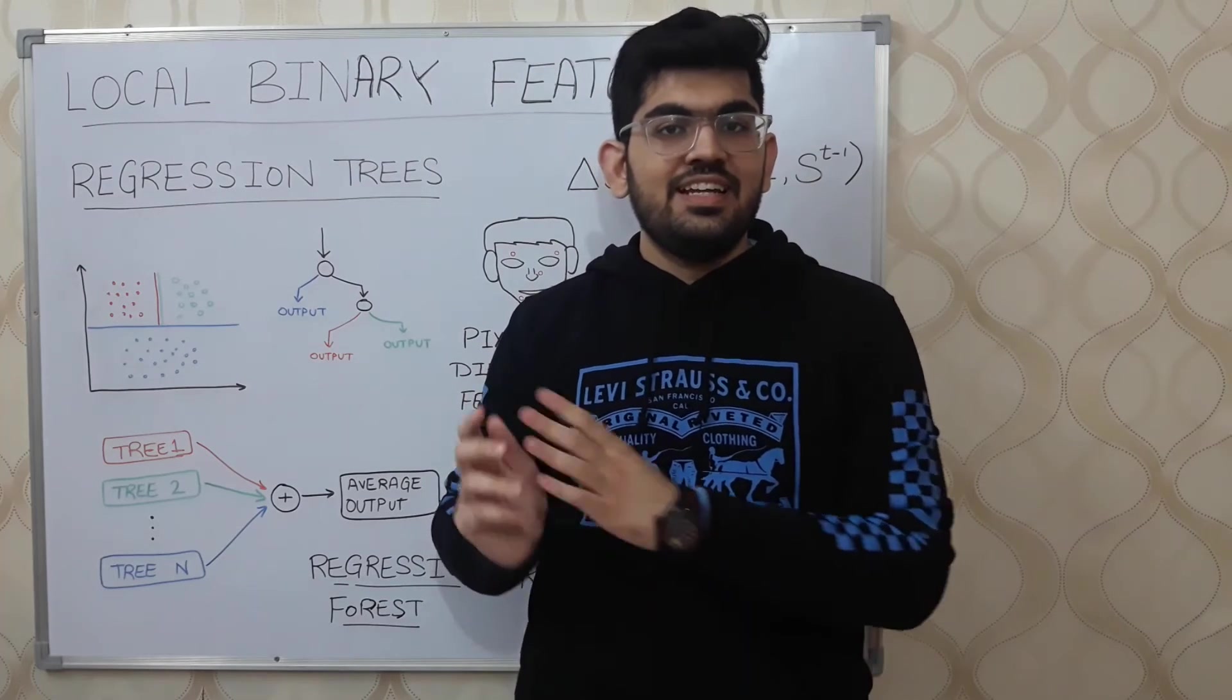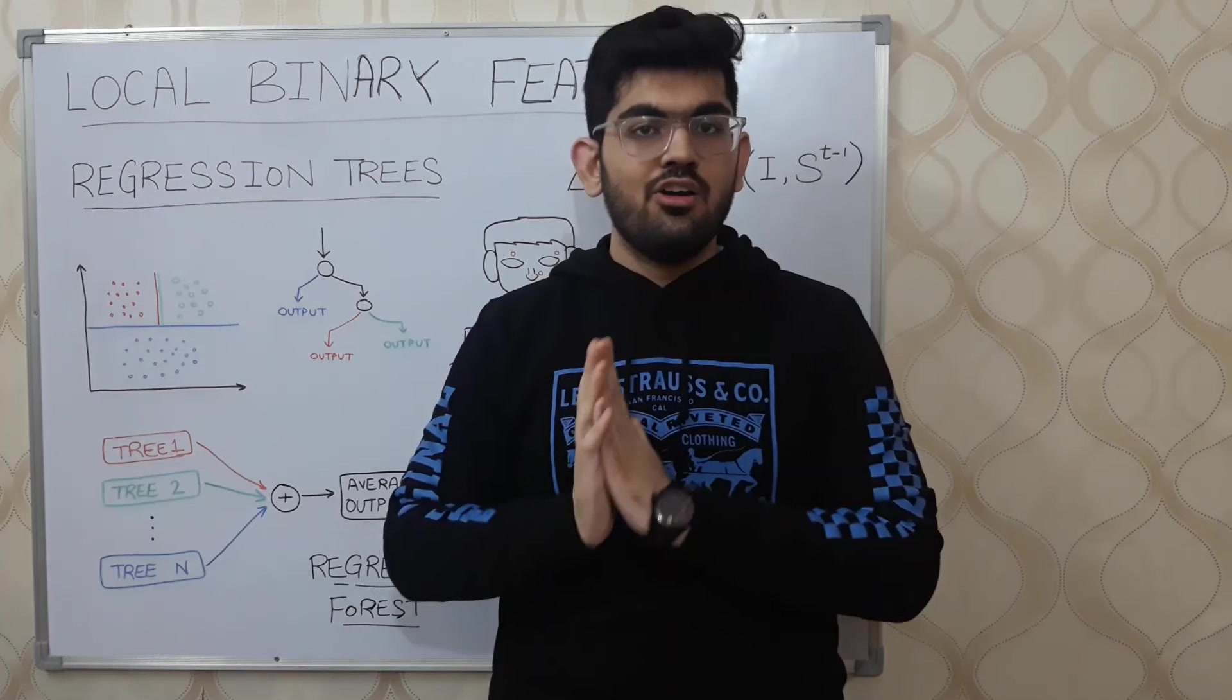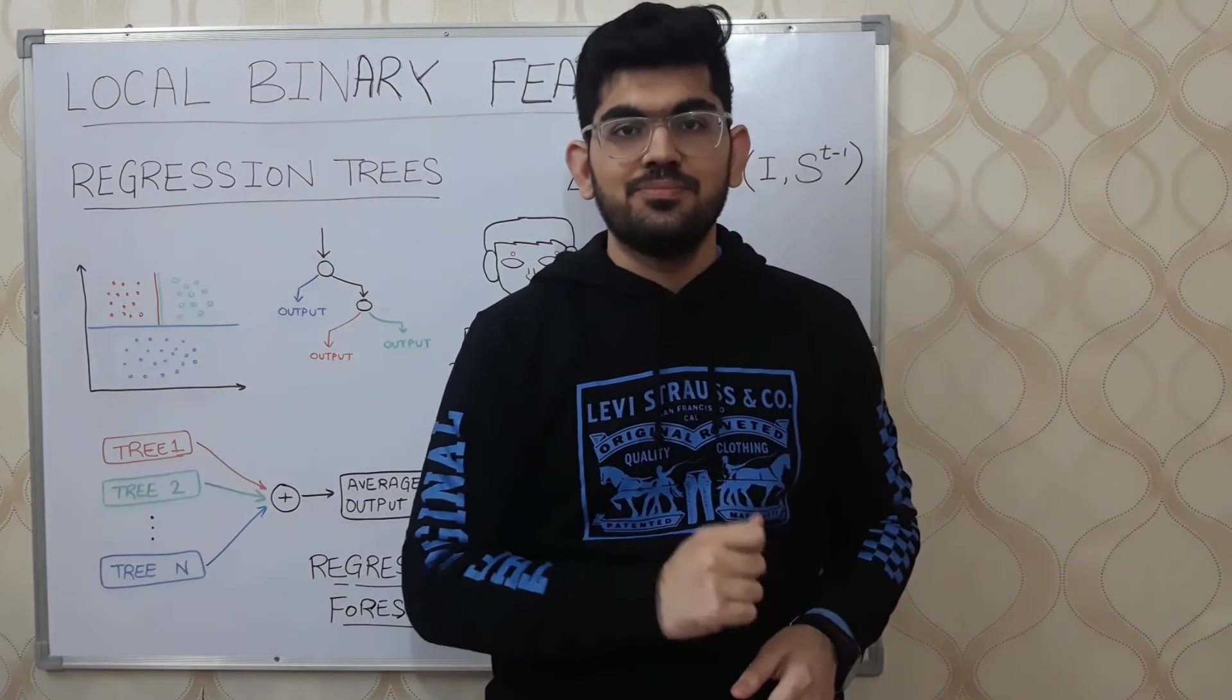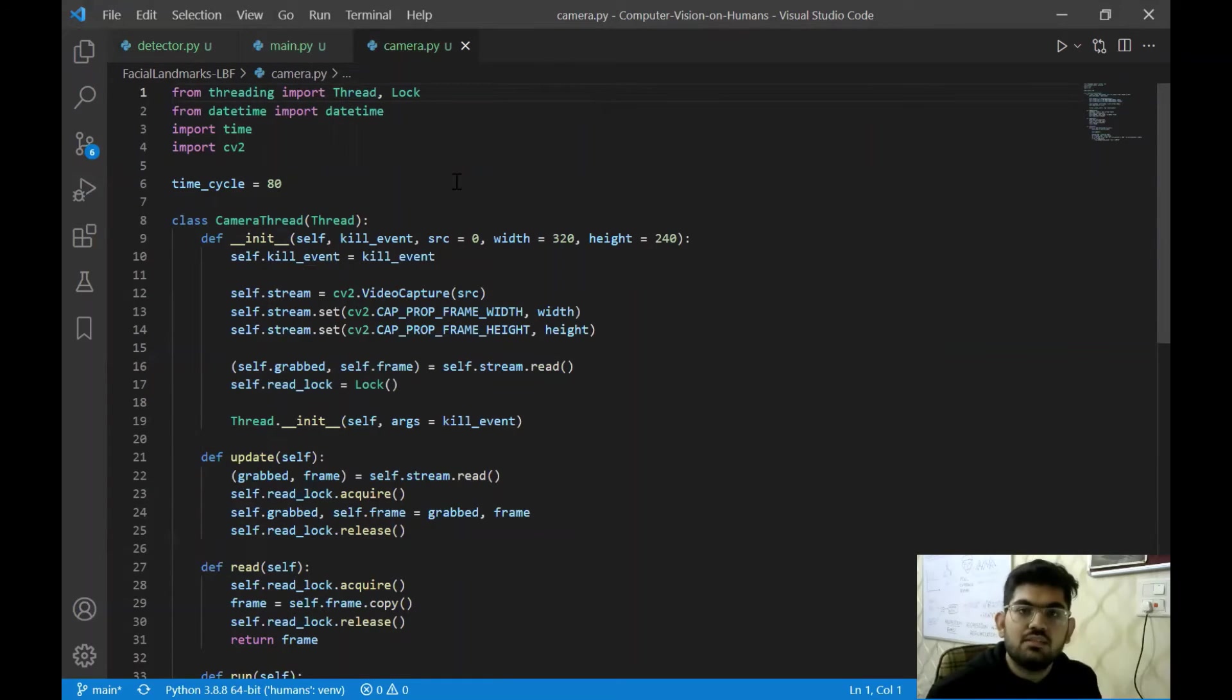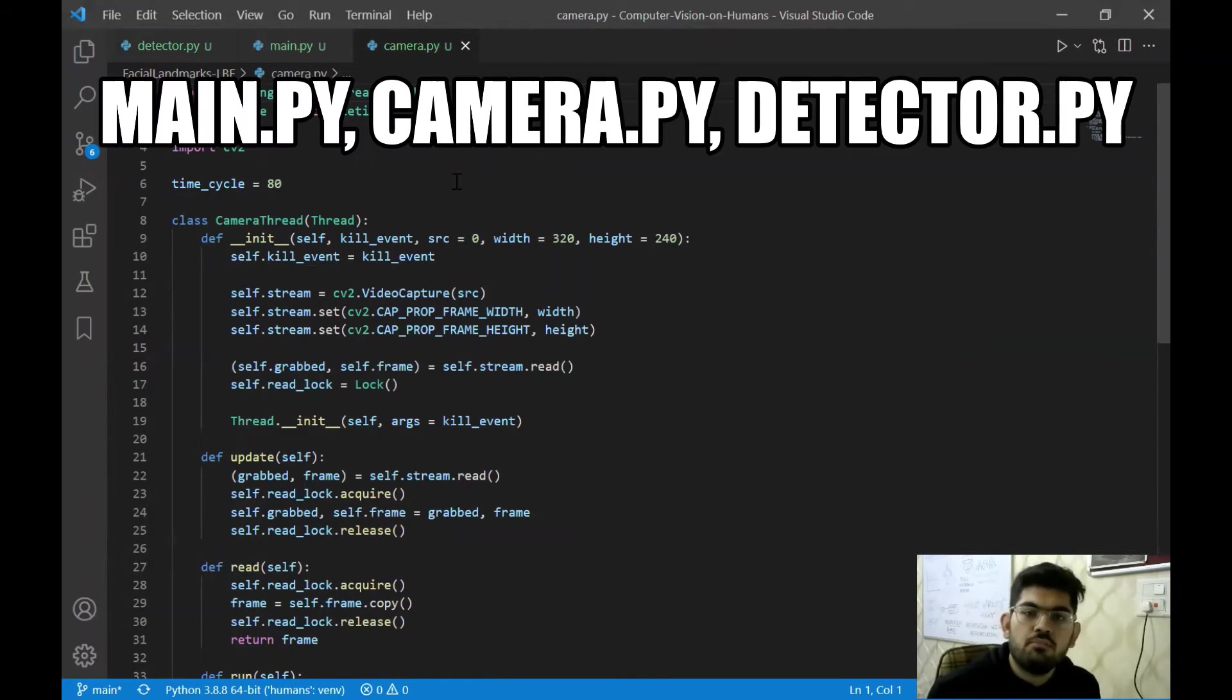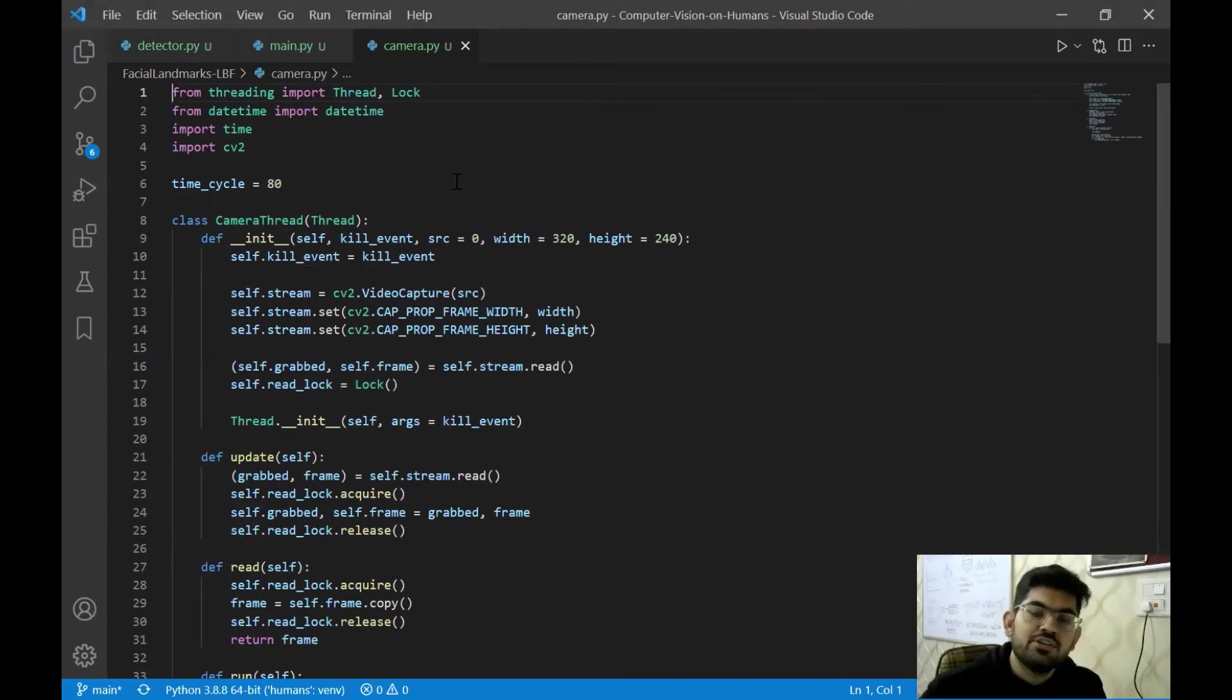Alright, so this is all the technical discussion related to the local binary features algorithm. Now, let us have a brief look at the code. The link to all the code would be present in the description box below. There are three files in this complete software which are main.py, camera.py and detector.py.